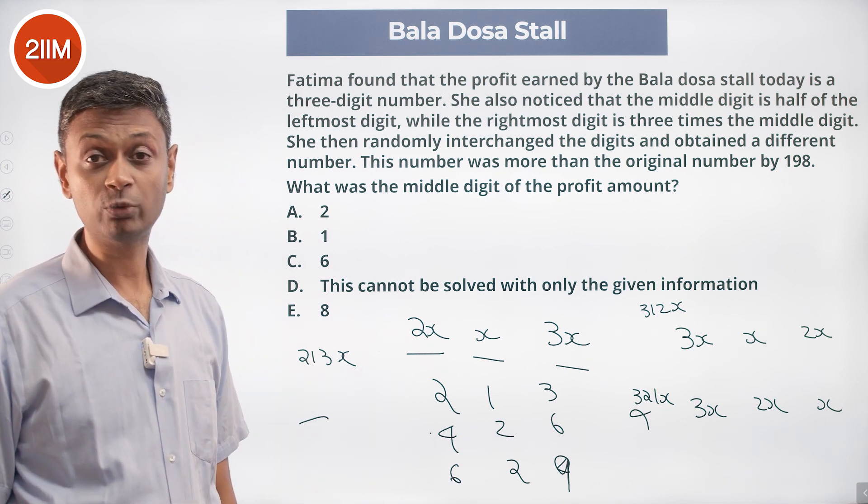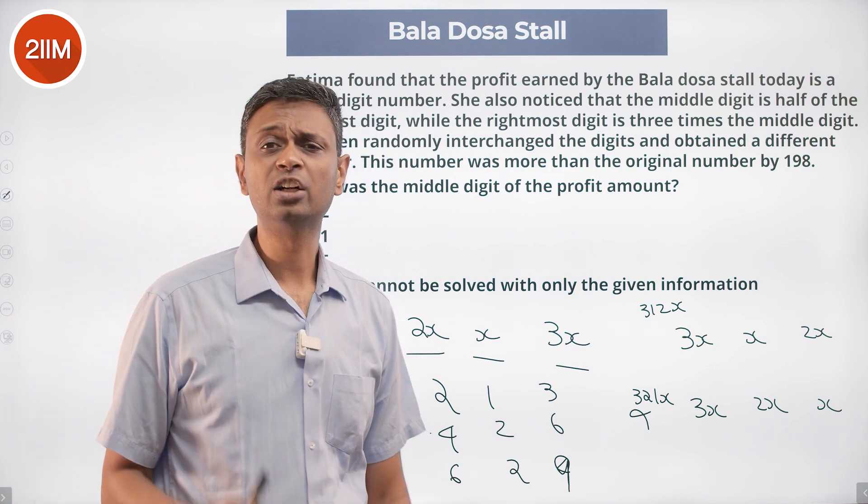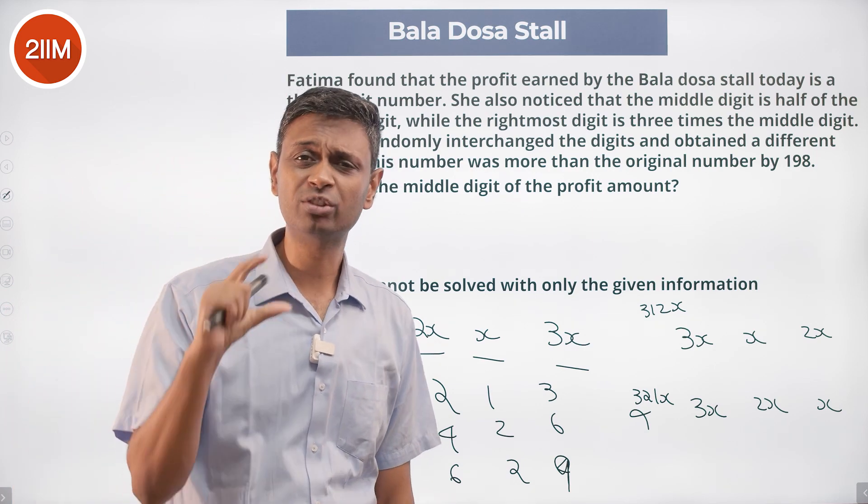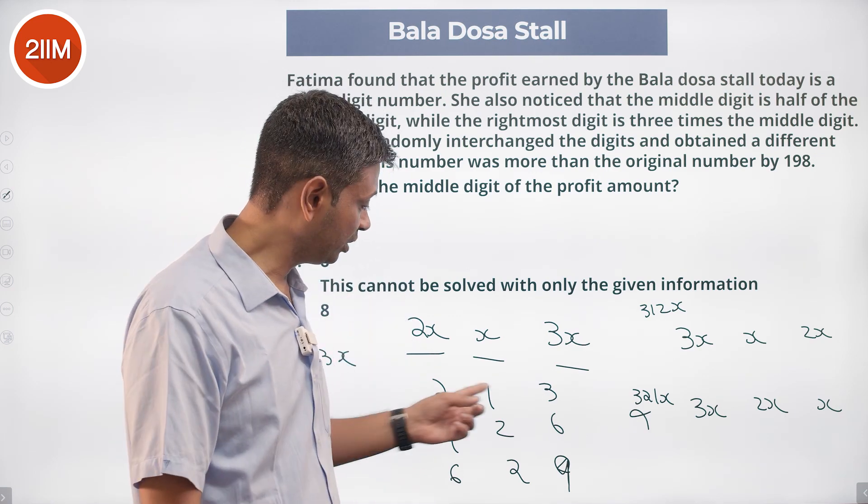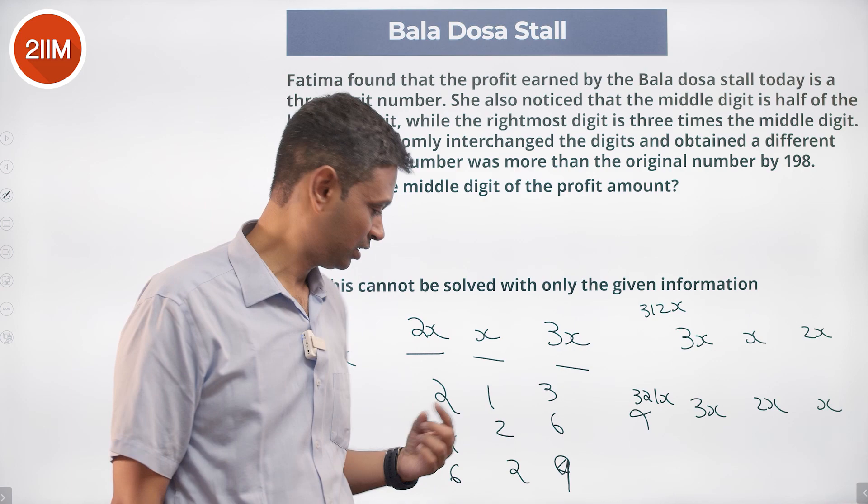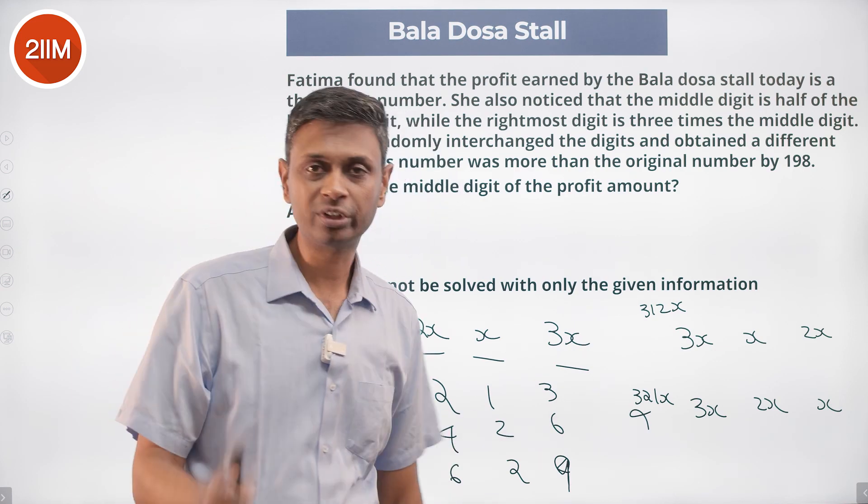426 going to 624 will tick the box. The difference will be 198, one of these three numbers. Under rejigging, we are doing this flipping the digit. Otherwise, it won't increase by 198. 2, 1, 3 to 3, 1, 2, the difference is only 99. 426 to 624, that works. 629 to 926, that doesn't work.